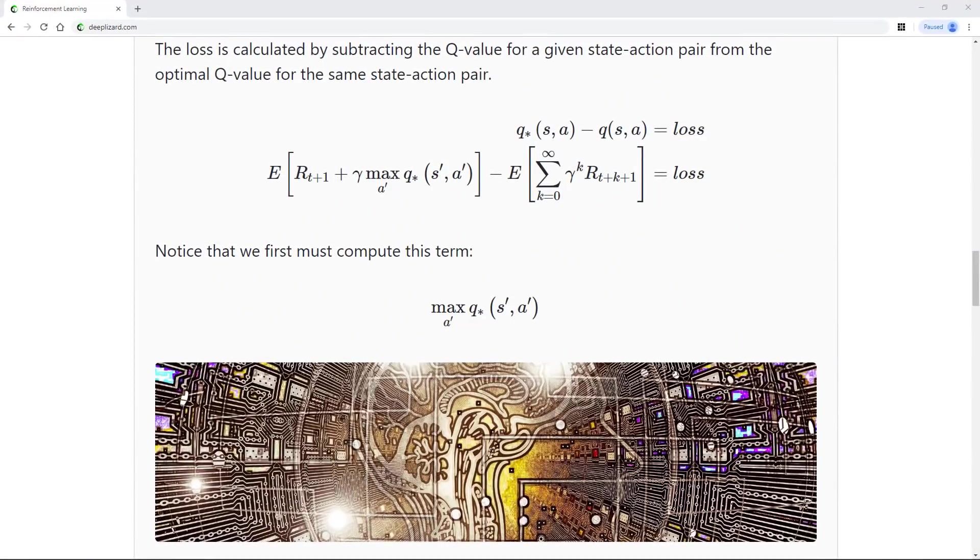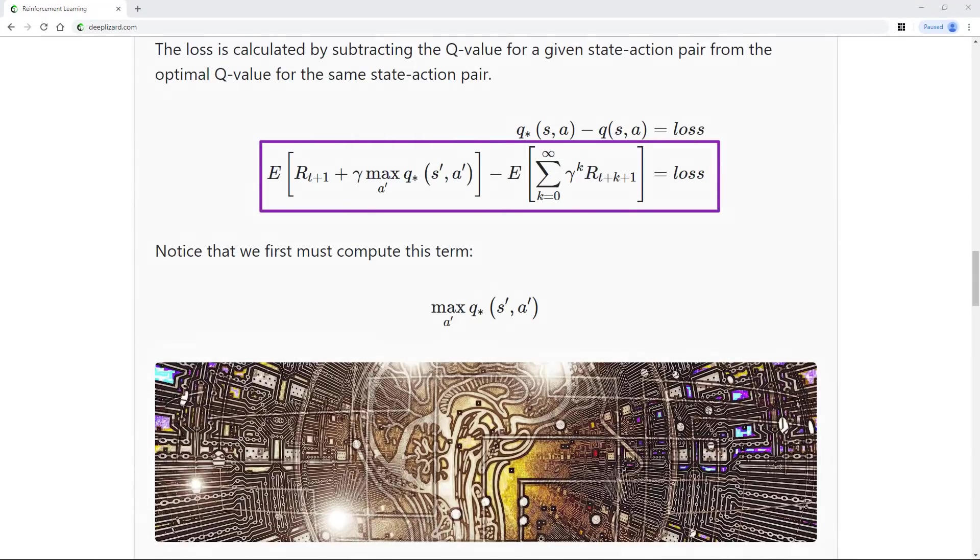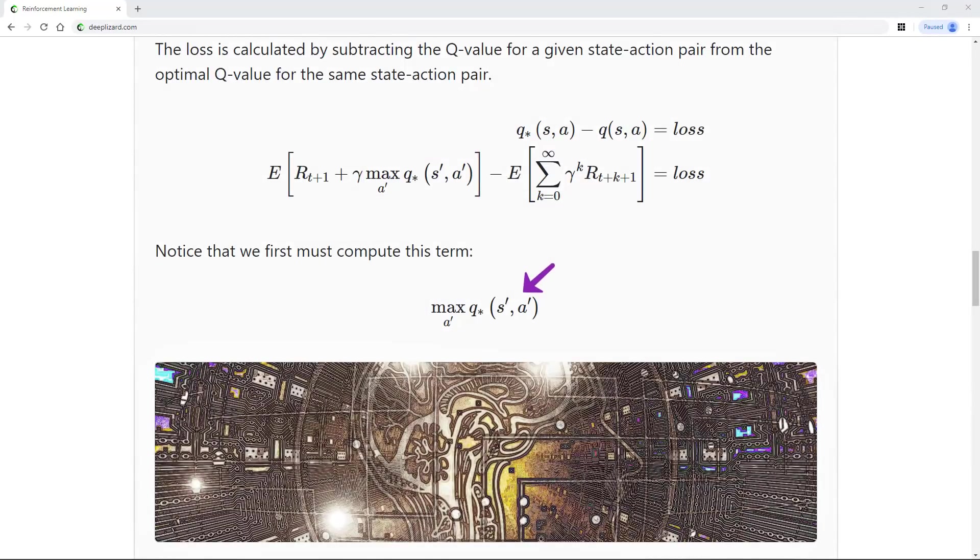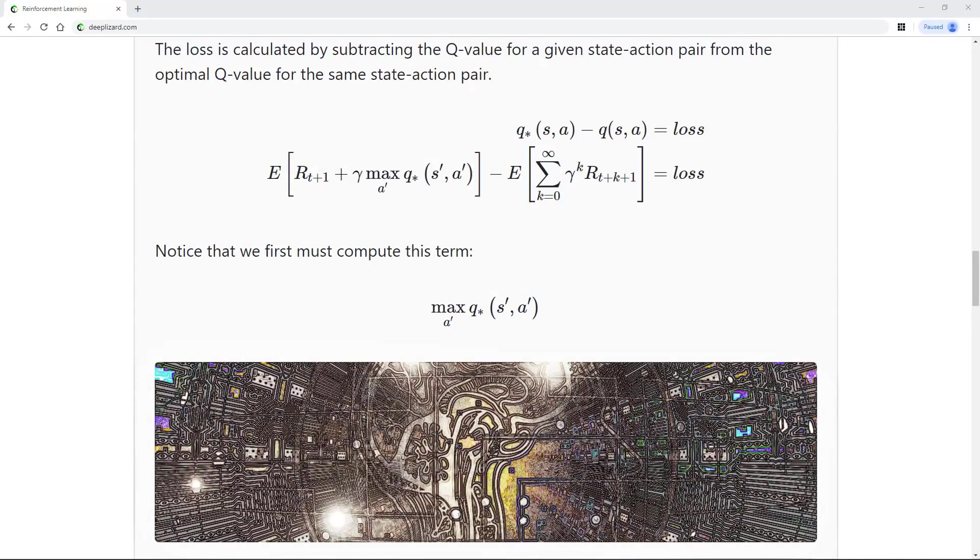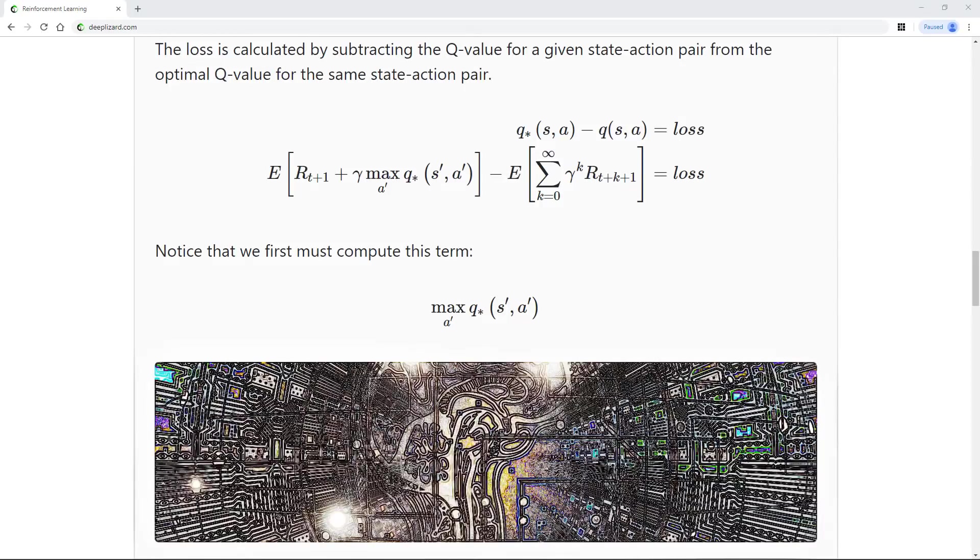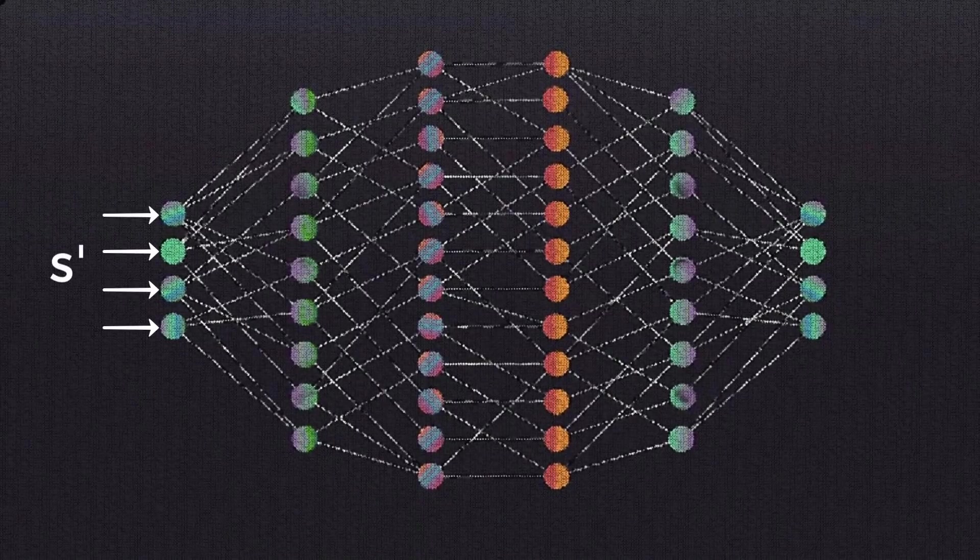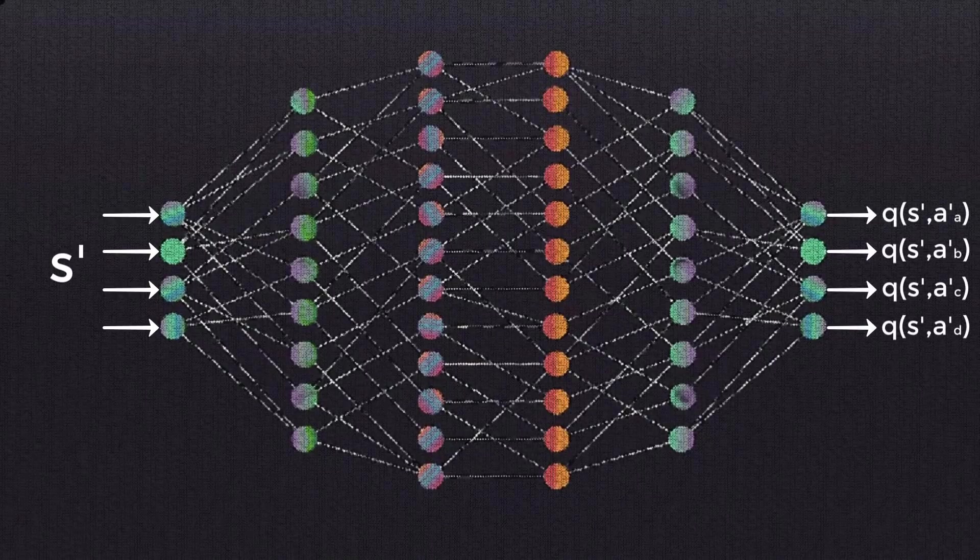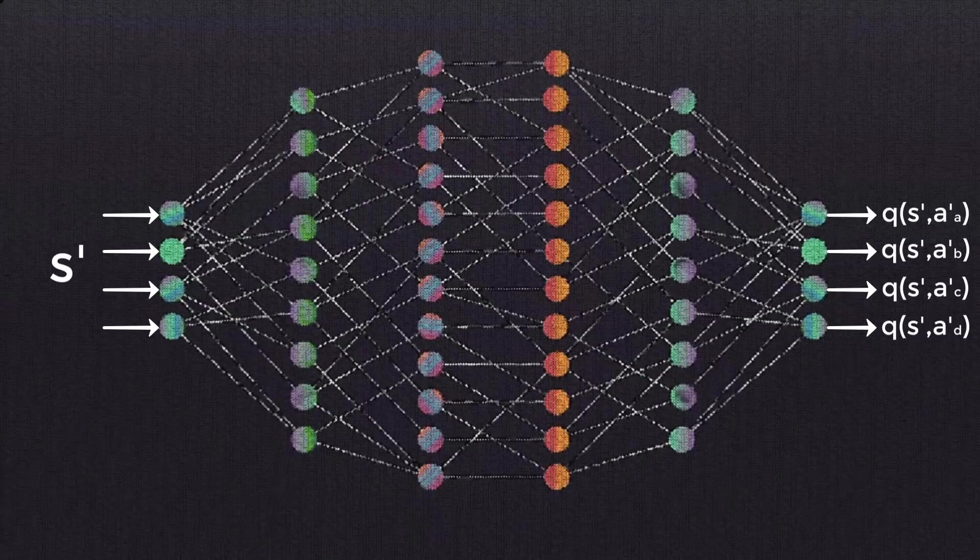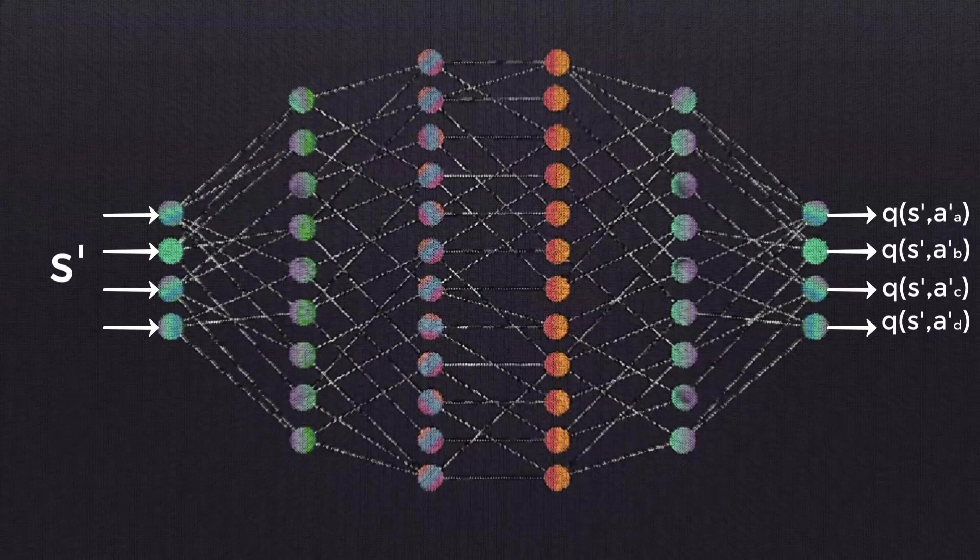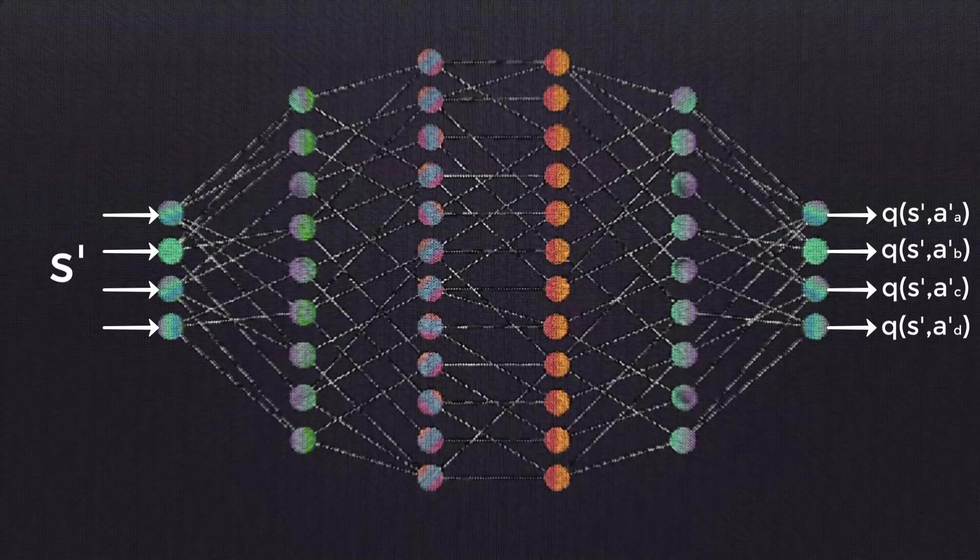Now, when we're calculating the optimal Q value for any given state-action pair, notice from the equation for calculating loss that we have this term here that we must compute. Recall that S prime and A prime are the state and action that occur in the following timestep. Previously, we were able to find this max term by just peeking in the Q table, remember? We'd just look to see which action gave us the highest Q value for a given state. Well, that's old news now with deep Q learning. In order to find this max term now, what we do is pass S prime to the policy network, which will output the Q values for each state-action pair using S prime as the state, and each of the possible next actions as A prime. Given this, we can obtain the max Q value over all possible actions taken from S prime, giving us this max term that we're after.